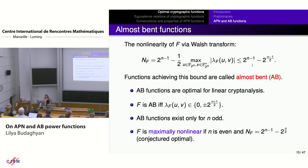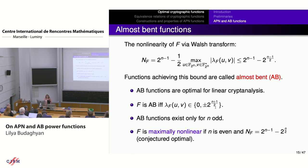The APN property is characterized by the condition that the sum of the fourth powers of Walsh coefficients equals a specific number. Non-linearity equals 2^{n−1} minus half the maximum of absolute values of Walsh coefficients, and it is upper bounded by 2^{n−1} − 2^{(n−1)/2}. Functions achieving this bound are called almost bent, or AB, and they can only exist for n odd since the Walsh coefficients can only take integer values.